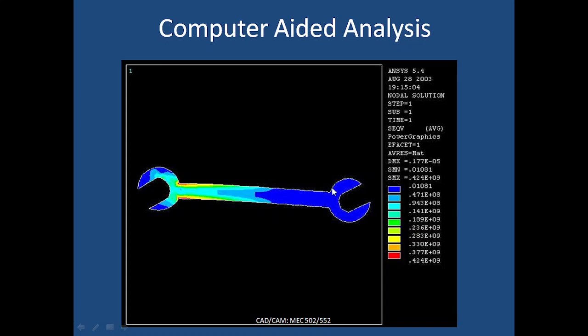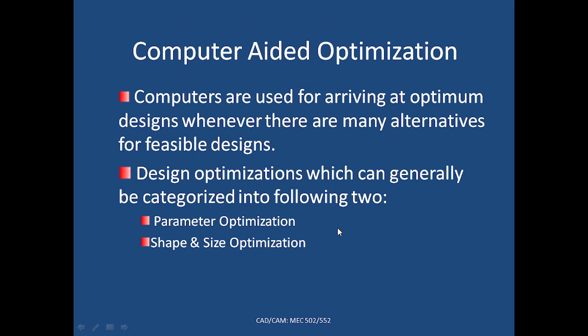The blue areas with very low stress may be candidates for material removal, so you can save material and thereby cost. These kinds of exercises are very common in industry. The meaning of engineering is not only to do the best thing, but to optimize so that you can save on cost, time, and other resources such as material. Another application is computer-aided optimization — there are specialized tools available for optimization.